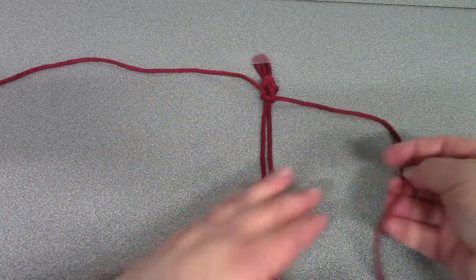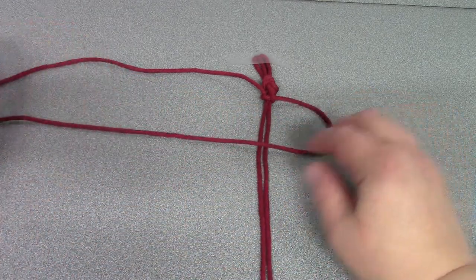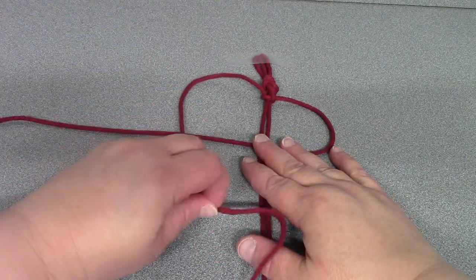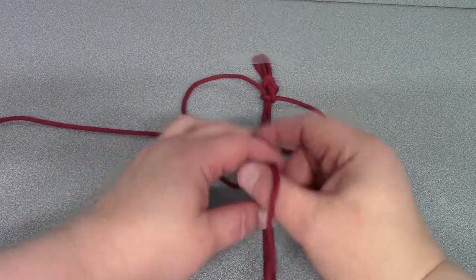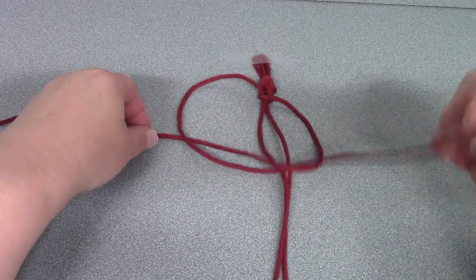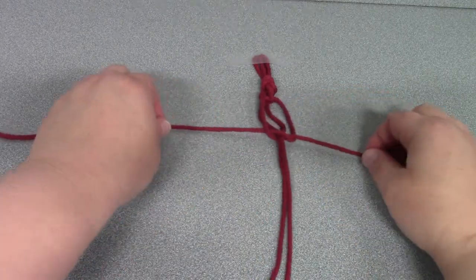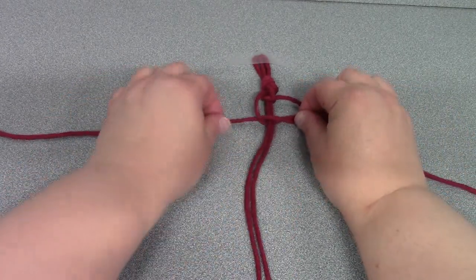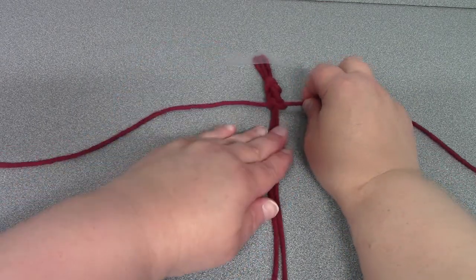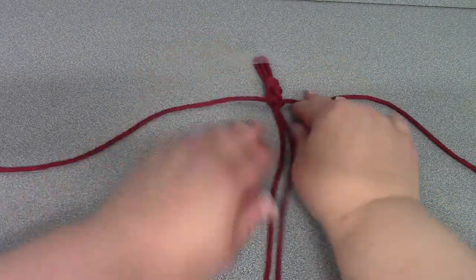For the second half you will take your right cord and lay it over the top like so. Now take your left cord and go over the top of that right cord, underneath the two middle cords, through the loop, and out the top. And again pull those middle cords tight. Keep your tension. And there we have our first square knot.